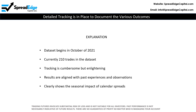The data set began in October of 2021. Currently there are 210 trades in the data set. This tracking is cumbersome but very enlightening. The results are aligned with past experiences and observations and clearly show the seasonal impact of calendar spreads.